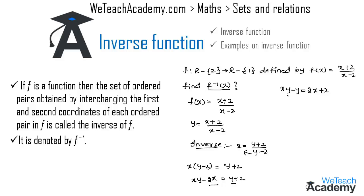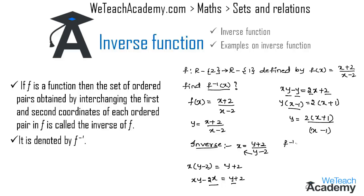Taking y as a common factor on the left gives y(x minus 1), and taking 2 as a common factor on the right gives 2(x plus 1). Transferring (x minus 1) to the other side, y = 2(x + 1) / (x minus 1). So f inverse of x = 2(x + 1) / (x minus 1).